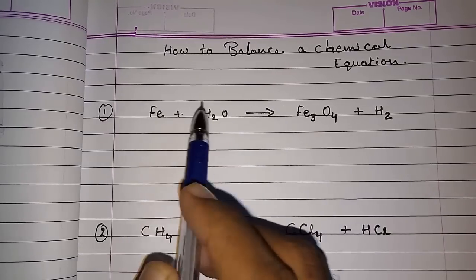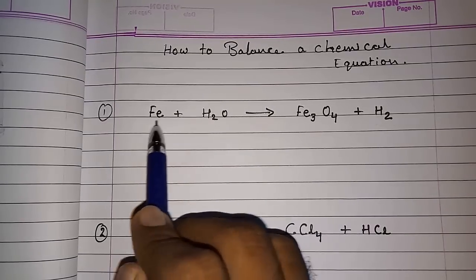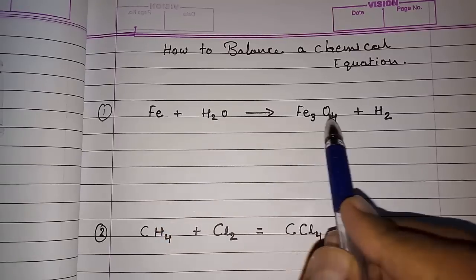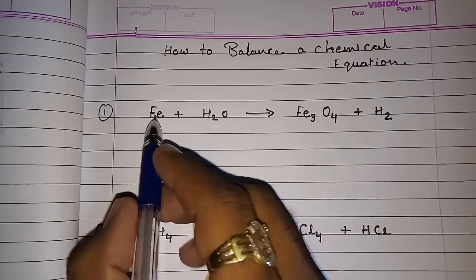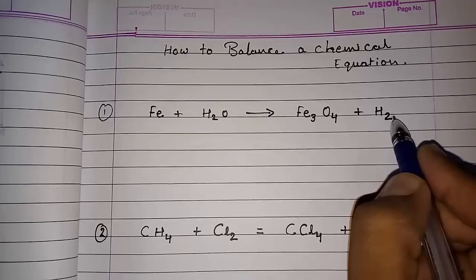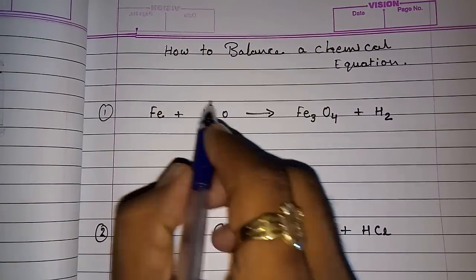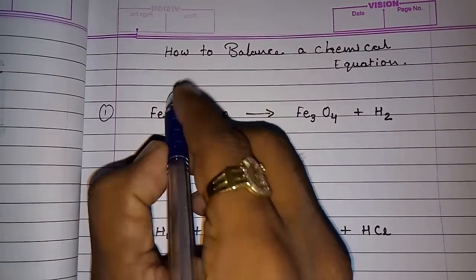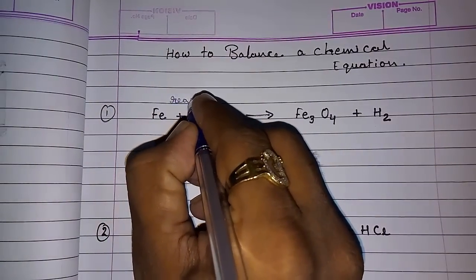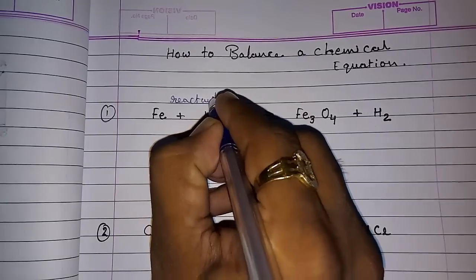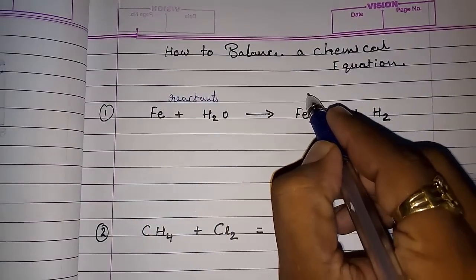Whenever any two elements or one element combine, they give some reactants - sorry, they give products. So this part which are combining, they are called reactants, and this part is called product.